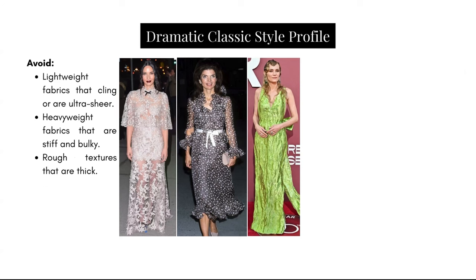Avoid lightweight fabrics that cling or are ultra-sheer. In light of the conversation about the importance of structure and weighted fabrics, going in the opposite direction doesn't do well for this type. These fabrics are too light and too delicate. That middle polka dot outfit on Jackie Kennedy is just too flouncy, and that fabric is too sheer. The crinkly fabric looks especially bad on a type like the Dramatic Classic that requires refinement and polish. And Diane Kruger really just looks lost in that dress. The first one is too ornate in detailing — lace is just too delicate for this type.